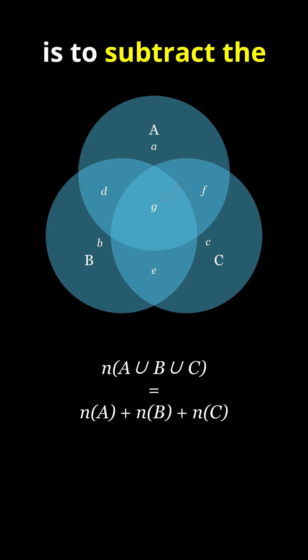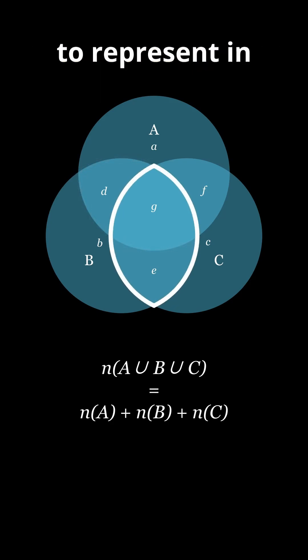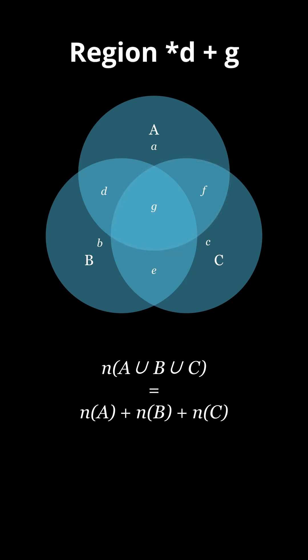And now our task is to subtract the overlap. The best way of doing this is by subtracting these regions since they are easy to represent in set form. For example, region E plus G is just A intersection B.